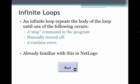You're already familiar with this in NetLogo because you have created forever loops, which is a type of infinite loop. And the forever loop is indicated by the little circular arrows in the bottom right-hand corner of this button below.